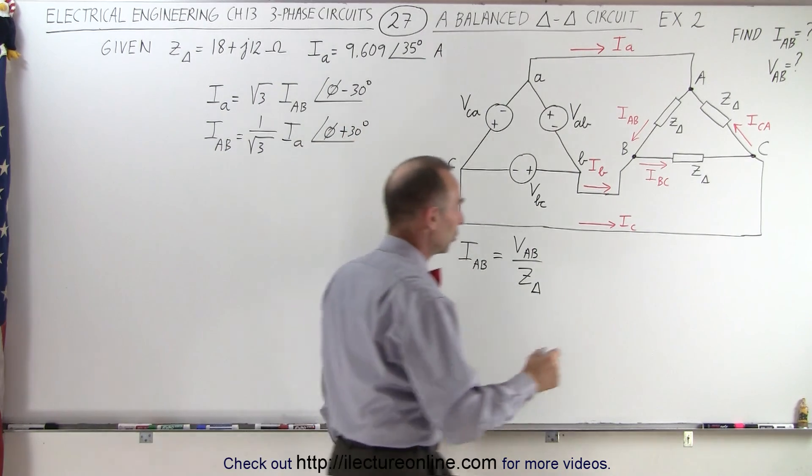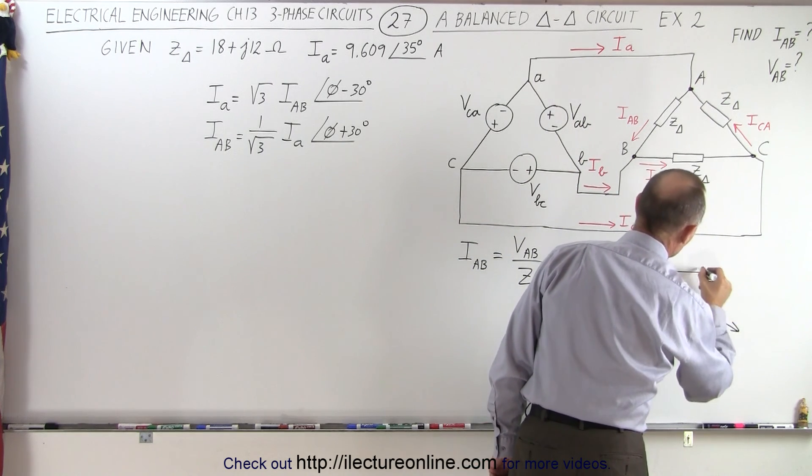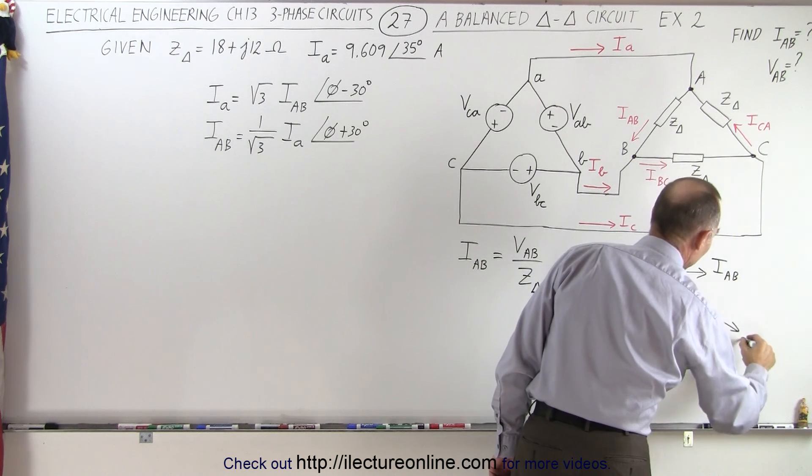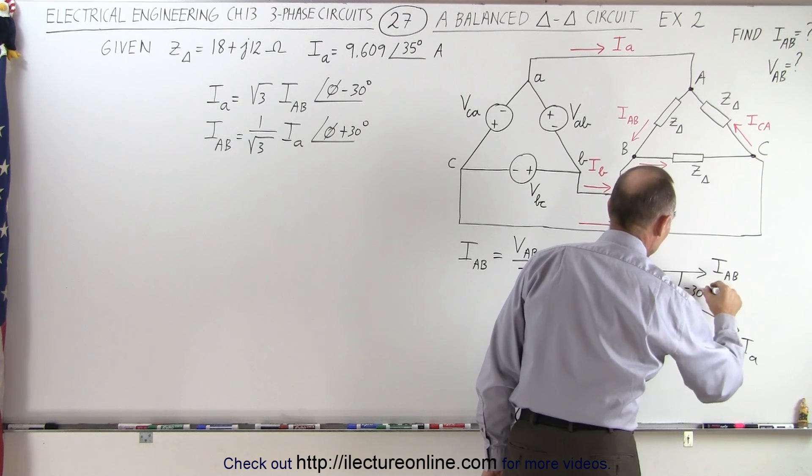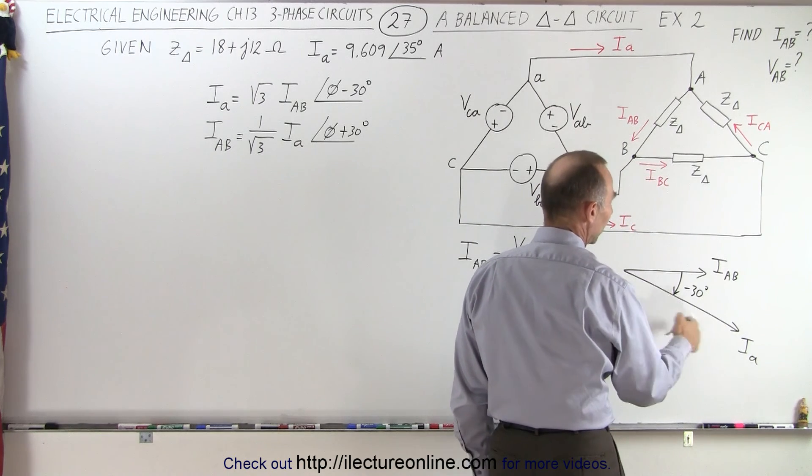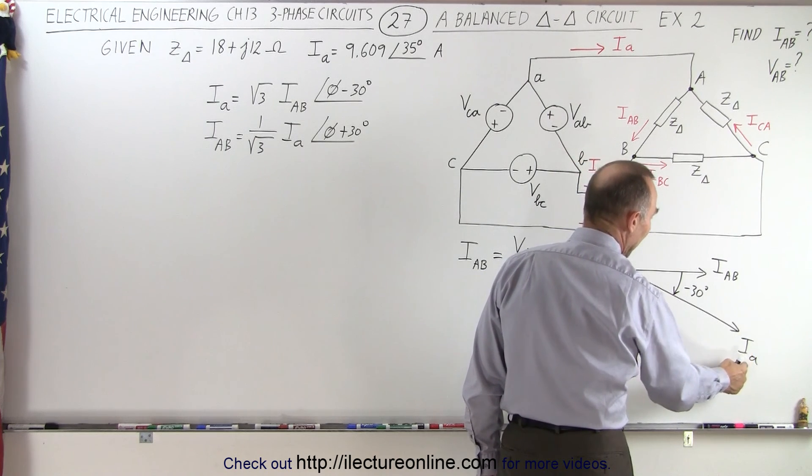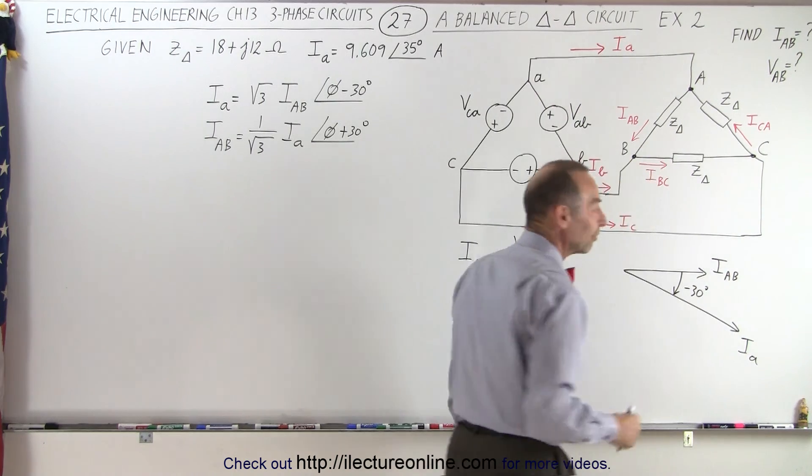Remember, the relationship between the two, if we were to draw that graphically like this, you can see that here we have IAB, there we have IA, and notice the phase difference of minus 30 degrees. So, if we go the other way around, from the magnitude, we divide by the square root of three to get from IA to IAB, and we add 30 degrees to go from IA to IAB in the phase.